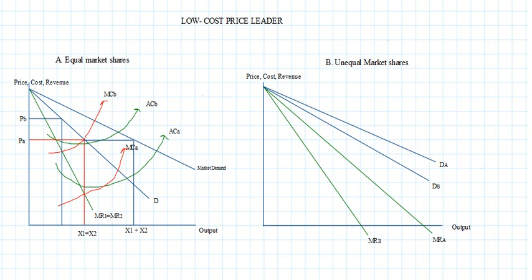This situation has been accepted by the second firm, firm B, because it does not want to risk getting engaged in a price war and losing the market, as it already has a high cost structure. It is better for the second firm to follow the market leader, produce the same level of output, and charge the same price PA. Now let us see how the situation may slightly differ when you have two firms with unequal market shares, where you have two demand curves and two marginal revenue curves.